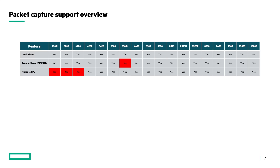Packet capture support overview. We have now seen three types to mirror traffic on the Aruba OS CX switches. All switches have support for mirroring packets. However, not all different types are available on all platforms. The local mirror is available on all platforms. However, the remote mirror session is not available on the 6300L switch, and the mirror to CPU is not possible on the 4100, the 6000, and the 6100 series.